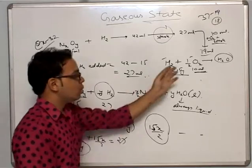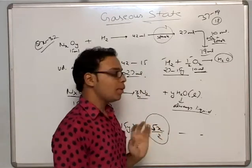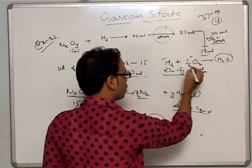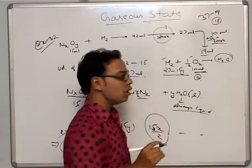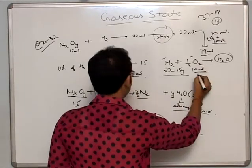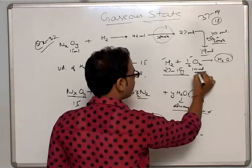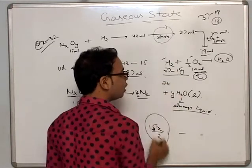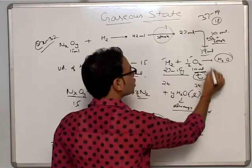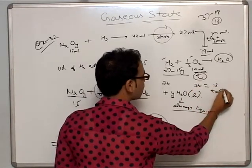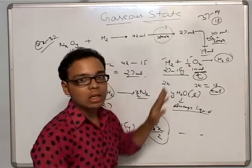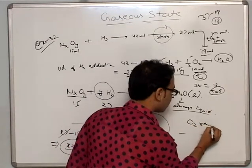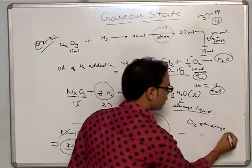We don't know which is the limiting reagent between NxOy and hydrogen. Let T ml of oxygen be consumed. Then 2T ml of hydrogen is consumed. Total consumption gives reduction: 3T equals 18, so T equals 6. Oxygen consumed is 6 ml, and oxygen added was 10 ml.